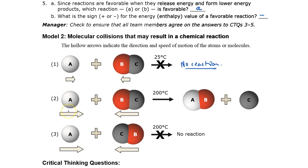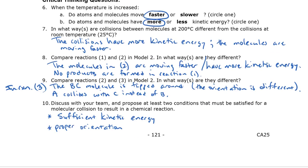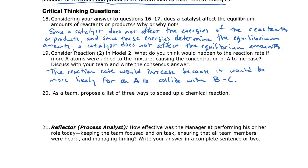If we add more A molecules to the mixture, everything else stays the same but we have more A. Statistically speaking, if there are more As bouncing around, it's more likely that they're going to hit a B, and therefore the reaction rate would increase. I wrote: the reaction rate would increase because it would be more likely for an A to collide with BC — of course, you have to hit the B part.